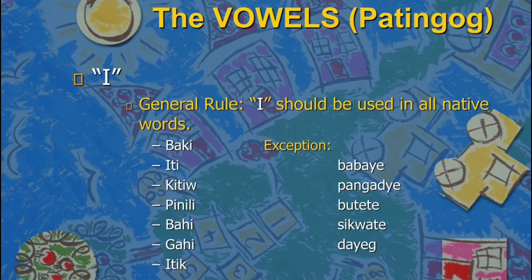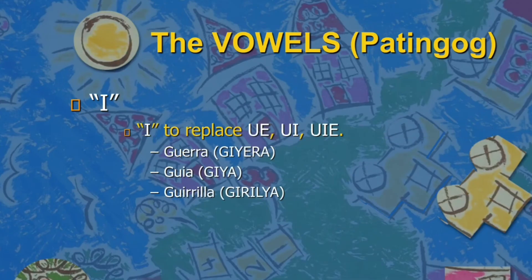For I, the general rule is that I should be used in all native words — like baki, iti, kitiyo, pinili, bahi, gahe, iring, iro. But there are exceptions, like the native words babay, day, pangadje, butete, sikwate. Babay should be read as babay, not babaye. The spelling is babay-e but it should be read as babay. And day is day, not daye. Also, I should replace UE, UI, and UIE — like gera, gia, guerilla.